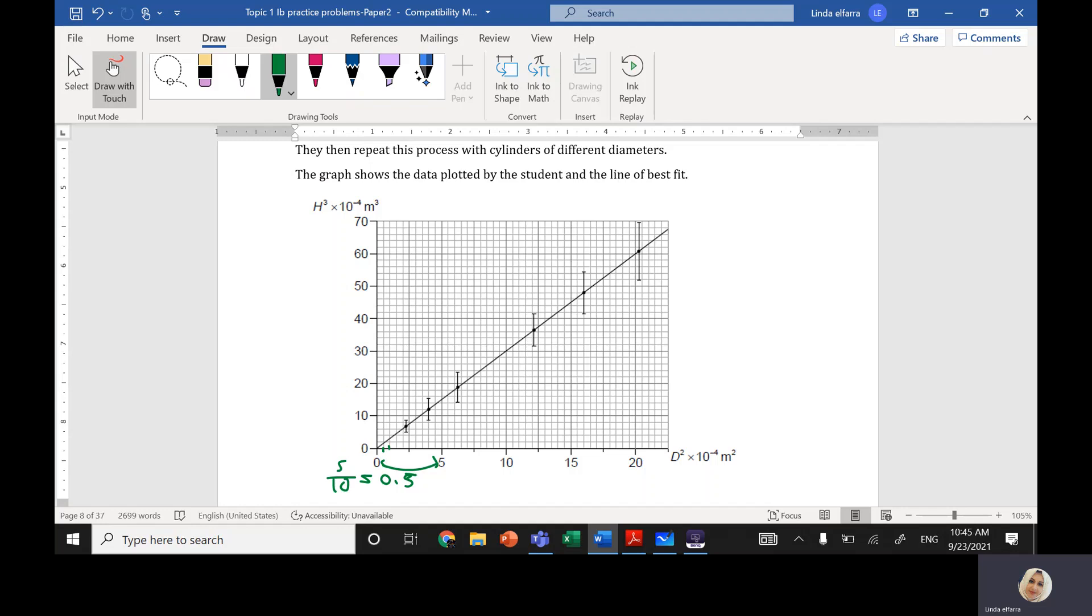How about in the vertical direction? The difference between 10 and 0 is 10, and I have 5 squares, so each square gives me a value of 2. That means I have here 2, 4, 6, 8, and 10. Now I need to find the value of c.